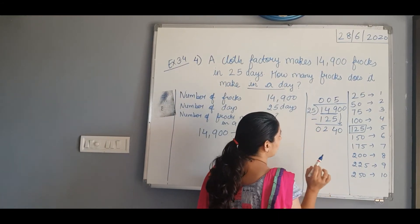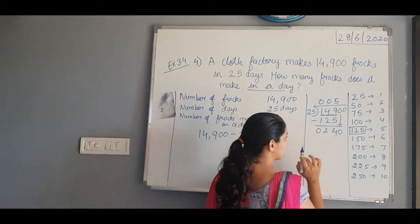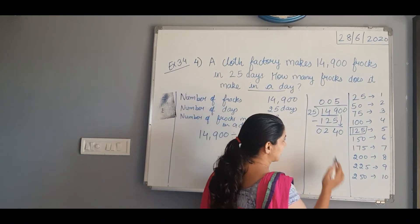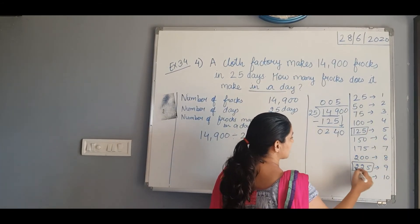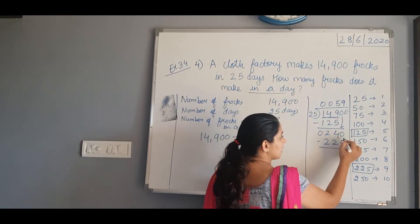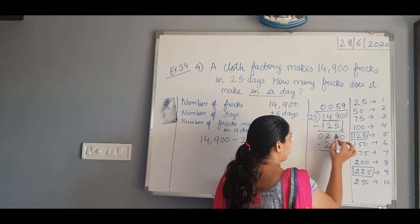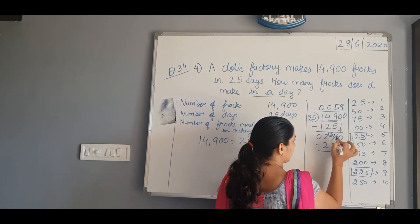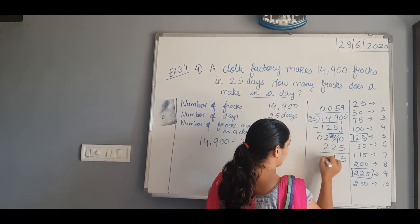We check the table of 25 for 240. It is not there, so we take 225 which is less than 240. So 25 nines are 225 — we put 9 here and subtract 225. 0 minus 5 is not possible, so we do borrowing. This 4 is reduced by 1 and becomes 3, and this 0 becomes 10. So 10 minus 5 is 5, 3 minus 2 is 1, and 2 minus 2 is 0.